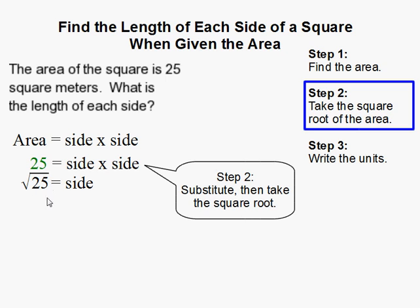Alright, so I have the square root of 25 equals one of the sides. And then if I solve that it gives me the side equals 5.